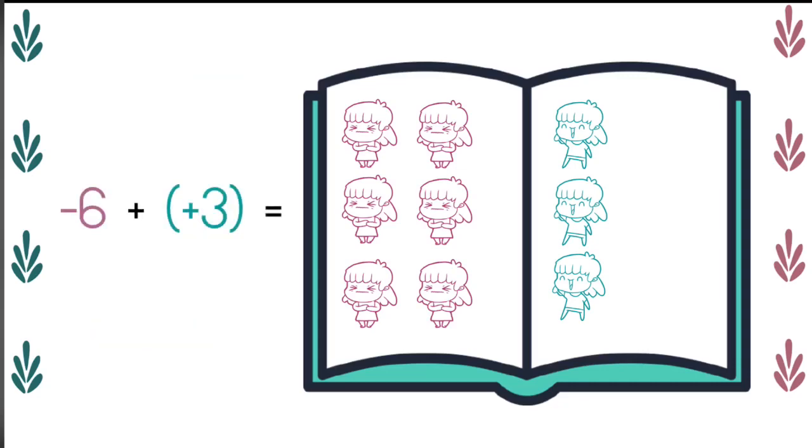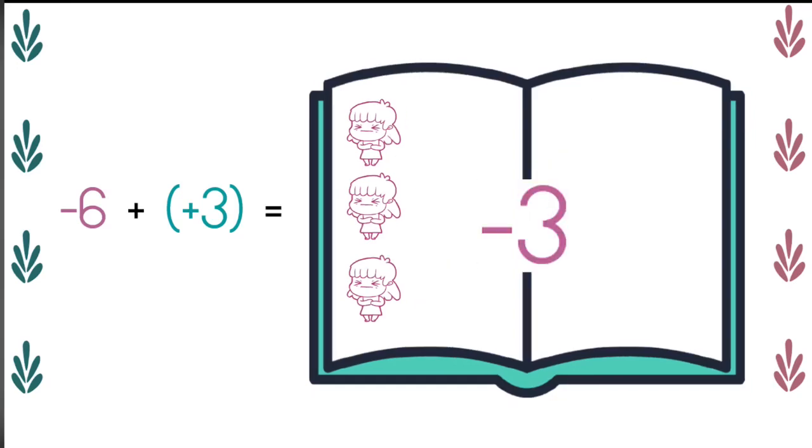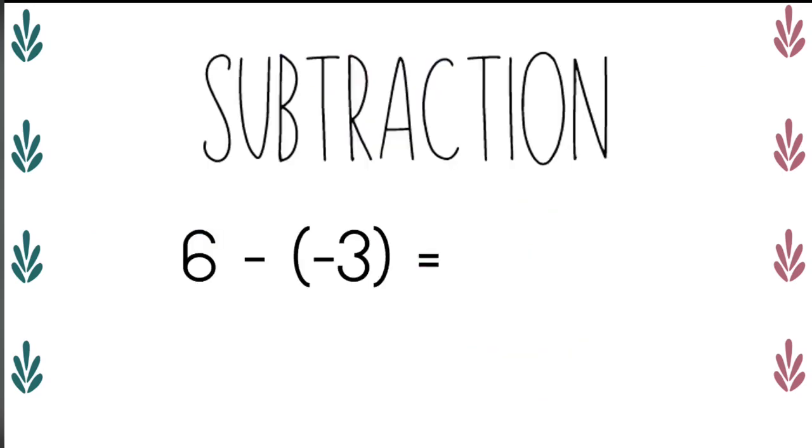Remember, for each unhappy and happy pair, we can eliminate them, leaving us with three unhappy girls with an answer of negative three.